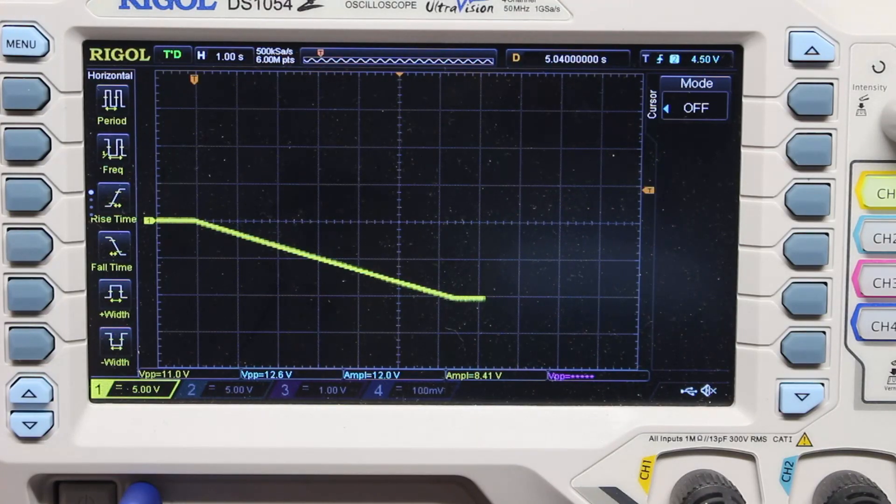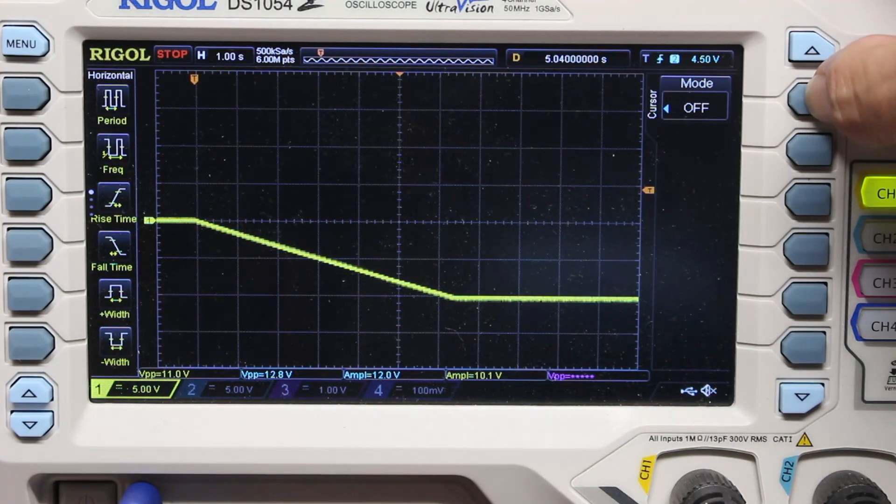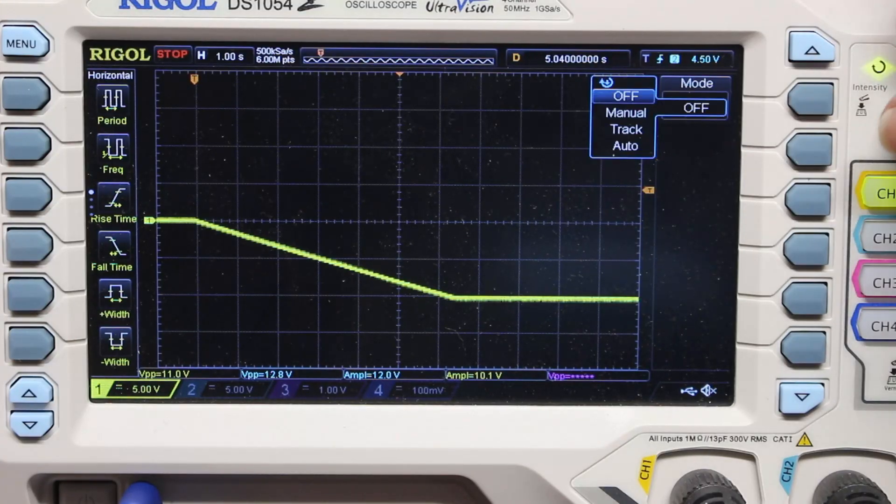Let's look at it on the scope instead. Yeah, it looks as if it's falling off at a constant rate, almost as if it's integrating a constant negative signal.